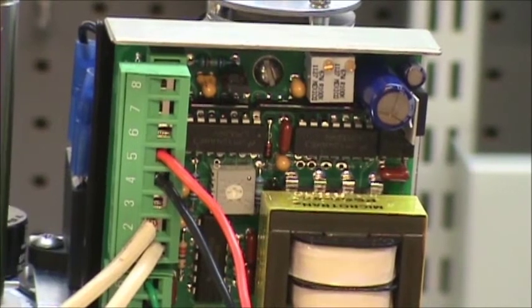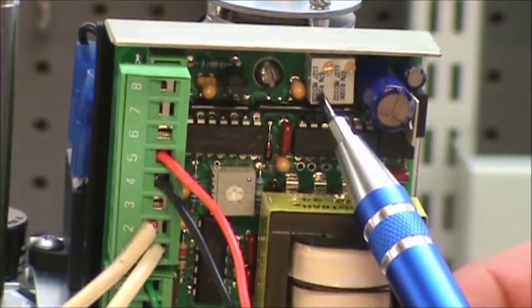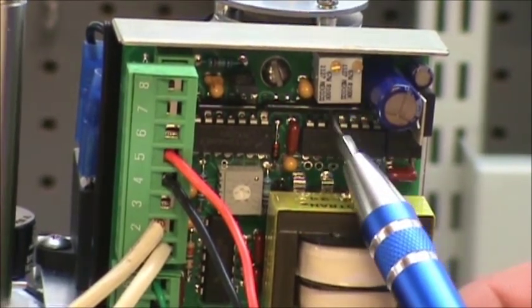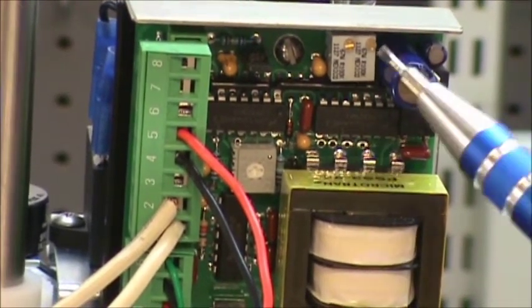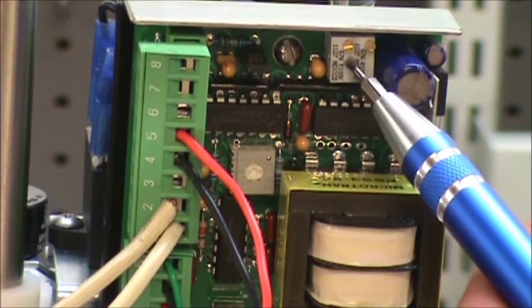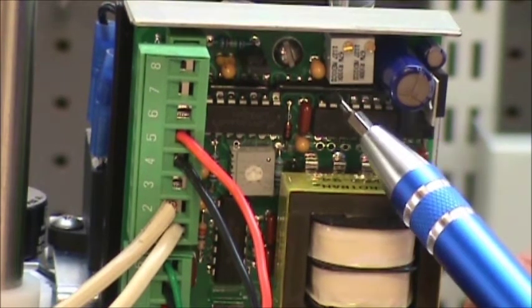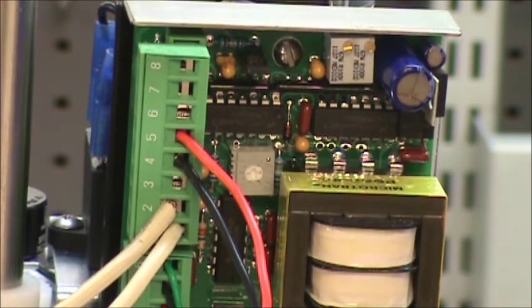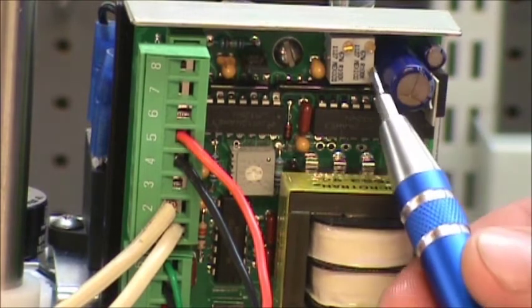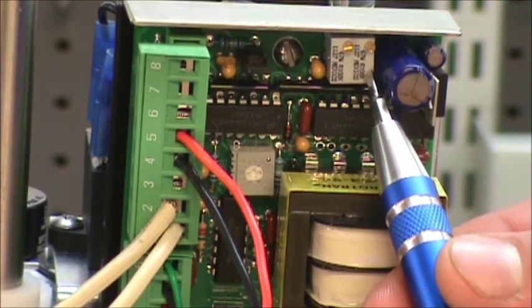So after you've calibrated the zero trim potentiometer here by setting it to 4 milliamps and rotating in small increments clockwise until you've reached the desired position, when you're finished with that, you can move on to the span trim pot, which is here on the right-hand side.